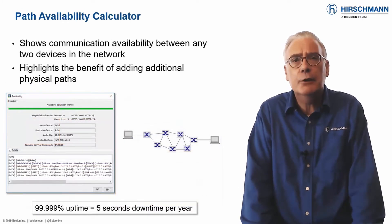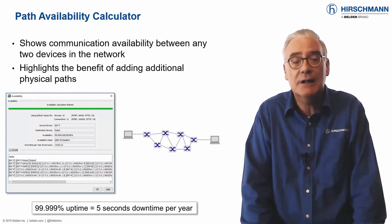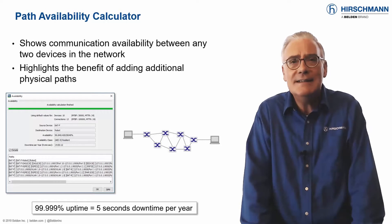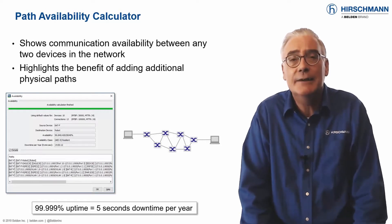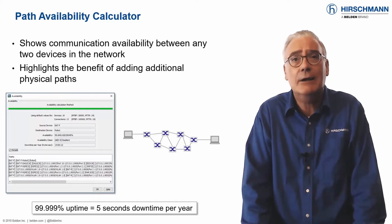How often have you heard the expression 5 nines availability? In other words, 99.999% uptime. Or 5 seconds a year downtime. This is the de facto standard for OT networks. Easy to say, massively complex to calculate.